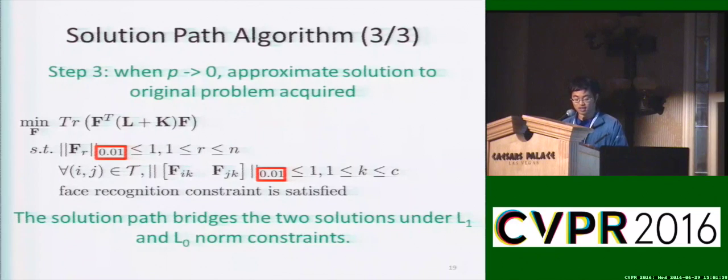When P approaches 0, we acquire an approximate solution to the problem under L0 norm constraints. The solution path algorithm bridges the two solutions, the easily accessible solution under L1 norm constraints, and the difficult-to-acquire solution under L0 norm constraints.